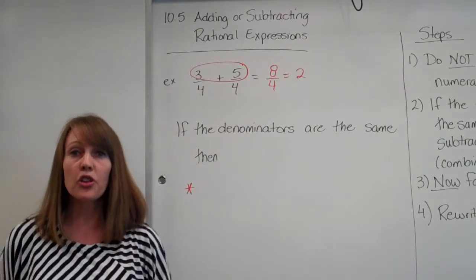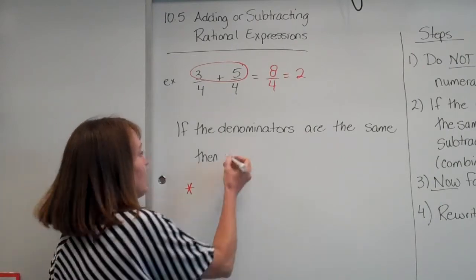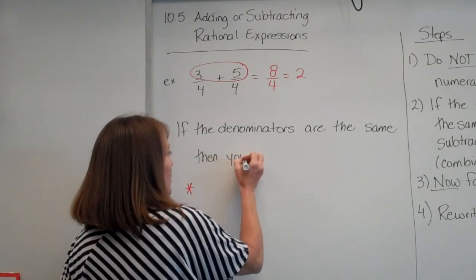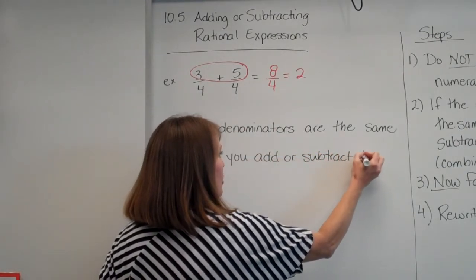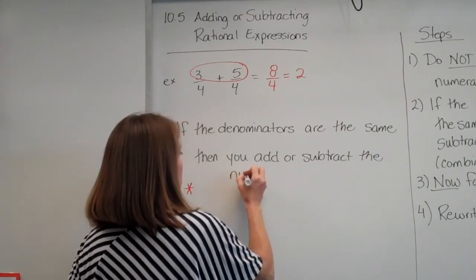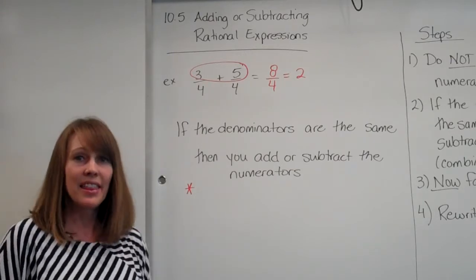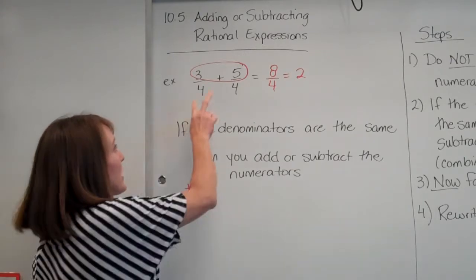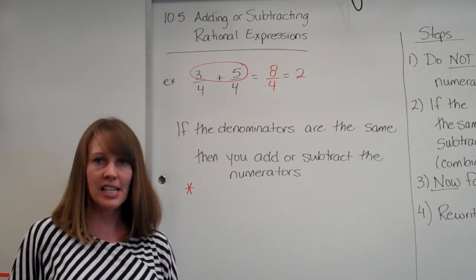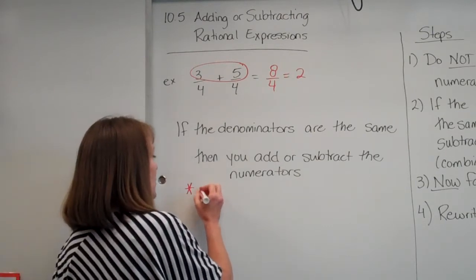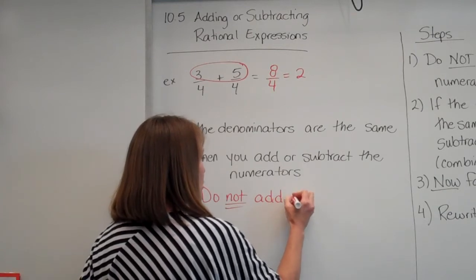So the same rules apply when we start throwing in rational expressions. If the denominators are the same, then you just add or subtract the numerators, the tops. This little star here is to remind us that we did not add or subtract the denominators. That was our common denominator, the size of our pieces. That doesn't change.